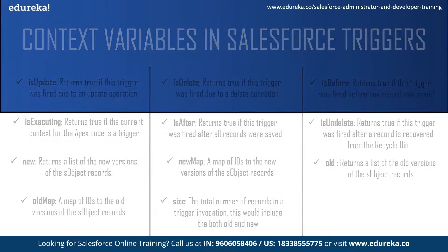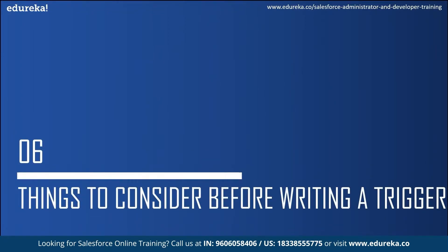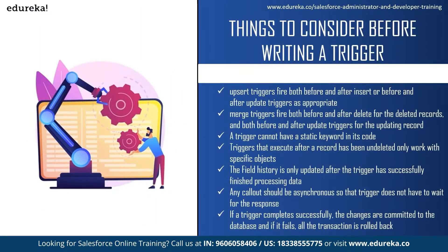Now let us move on to the things to consider before implementing a Salesforce trigger. First, upsert triggers can fire both before and after insert or before and after update triggers as appropriate. Next, merge triggers can fire both before and after delete for the deleted records, and both before and after update for the updating records. Also, a trigger cannot have a static keyword in its code. Triggers that execute after a record has been undeleted only work for specific objects. Field history is only updated after the trigger has successfully finished processing. Any callout should be asynchronous so that triggers do not have to wait for the response. And finally, if a trigger completes successfully the changes are committed to the database; if it fails, all transactions are rolled back to their previous state.